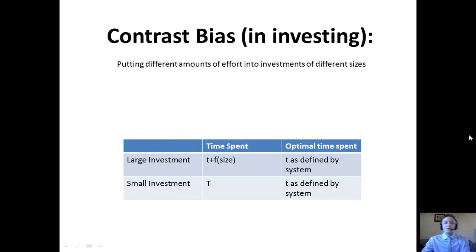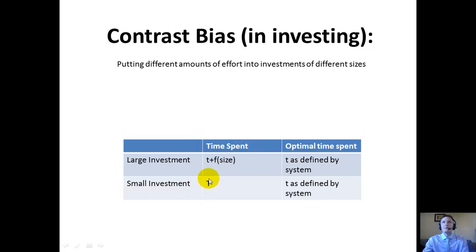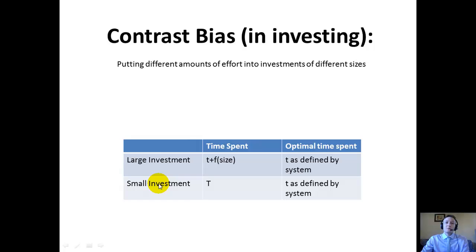If we have a table that shows our time spent and the amount of money invested in a certain investment, we will see that for most investors, this is how it works. If you've got some small investment and you're spending some time T — let's say an hour investing a thousand bucks — you're going to spend that hour making the decision on the stock. That hour you spend on that investment decision is related to the amount you're investing. If an investor gets more money to invest, say a windfall of five thousand dollars, he's going to spend more time than that initial hour investing that bigger amount.